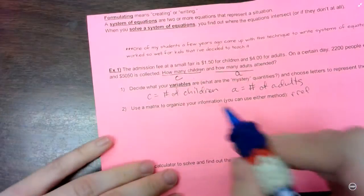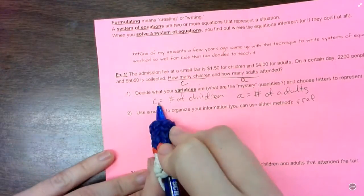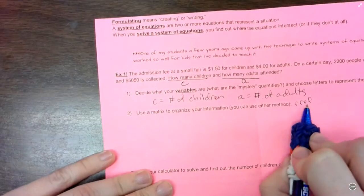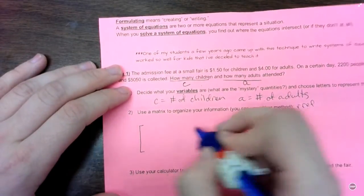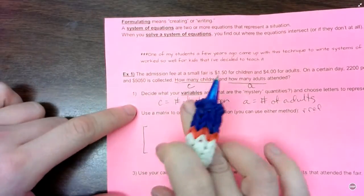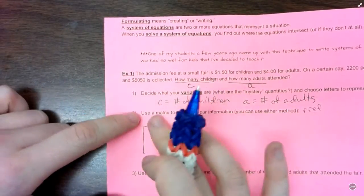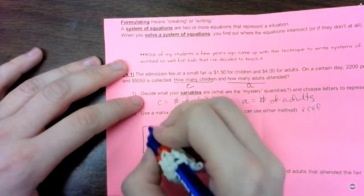So I'm going to start off with a three column, two row matrix, because I've got two variables and I want to do reduced row echelon form. So I do need that extra column. So I'm going to draw that out. Now, however many variables you have, they each need one column to represent them. So I'm going to put children in the first column.